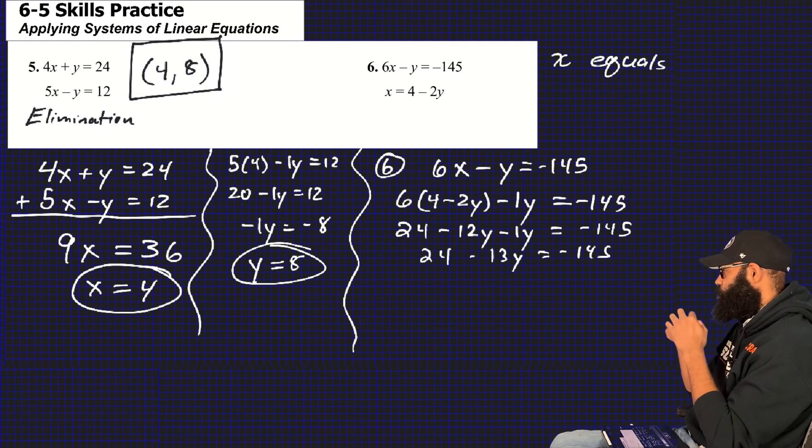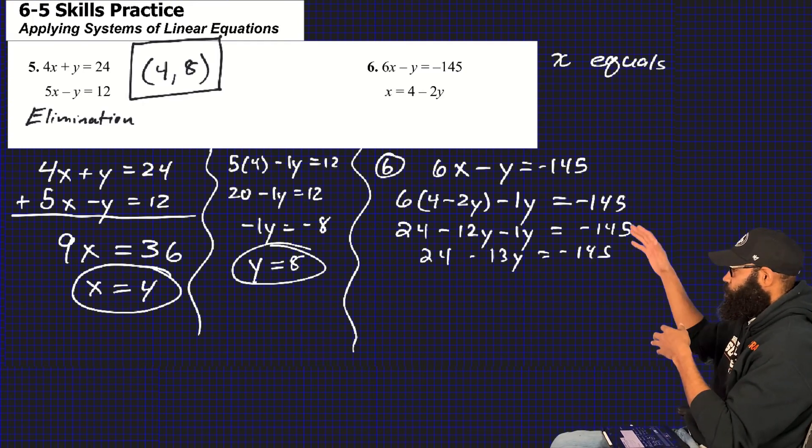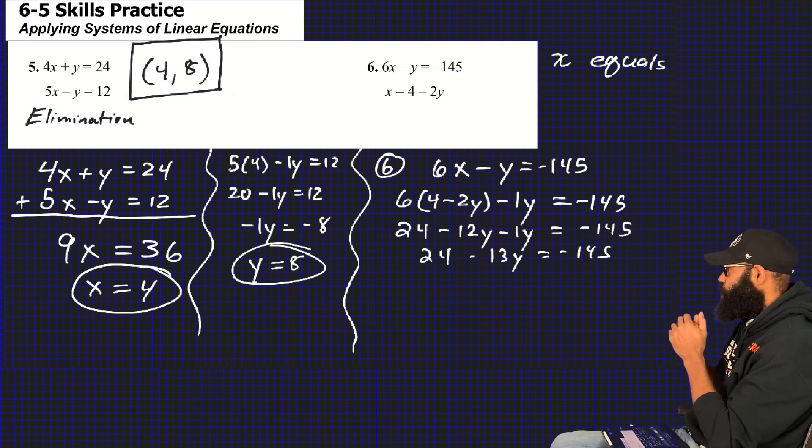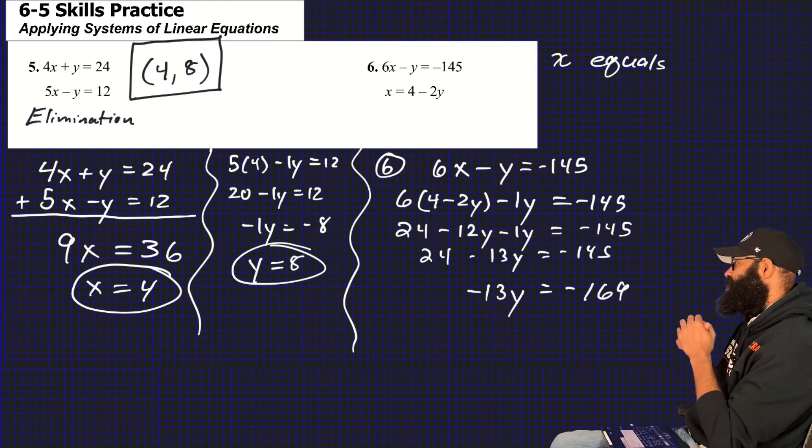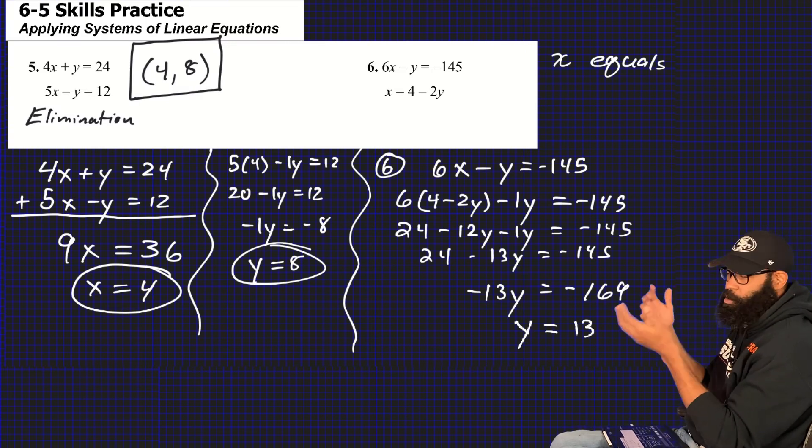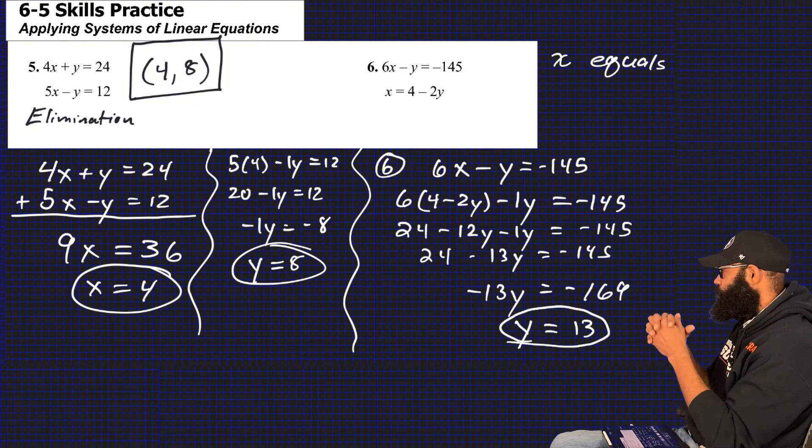Going to collect like terms, so that's where the 24 minus 13y comes from. And now guys, we're staring at a two-step. We've already done a multi-step equation with distributive property, collect like terms, now you're staring at a two-step. You of course are going to subtract 24 from both sides. Gives you negative 13y equals negative 169. Anybody that knows 13 times 13, those are squares. We don't want to see squares in chapter 11, 12, or 10, I don't know. But y is equal to 13, guys.